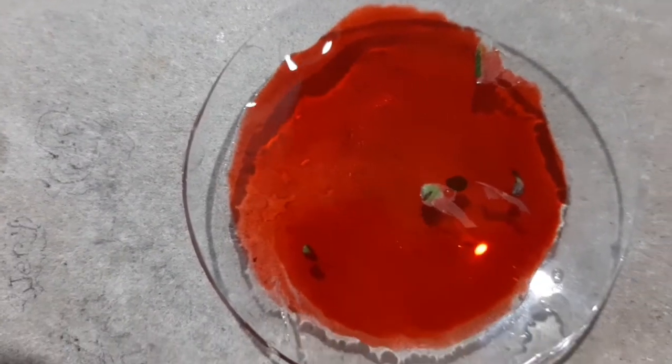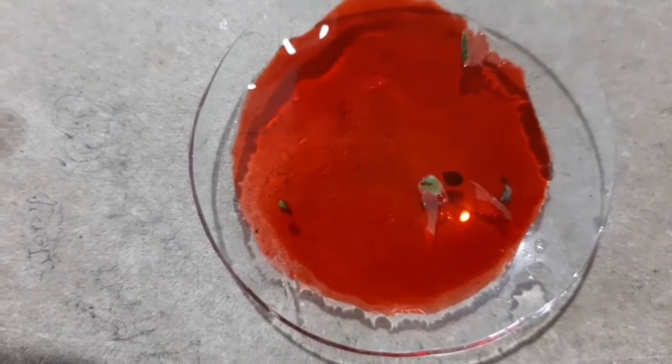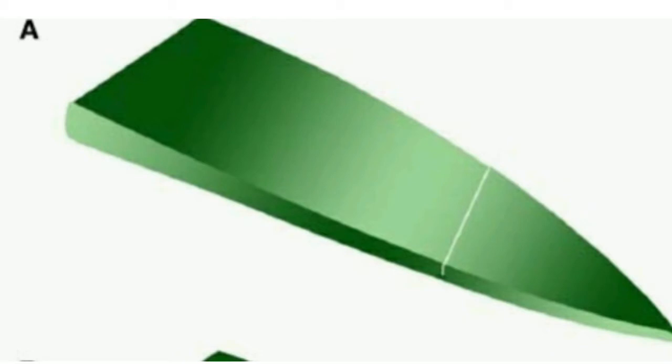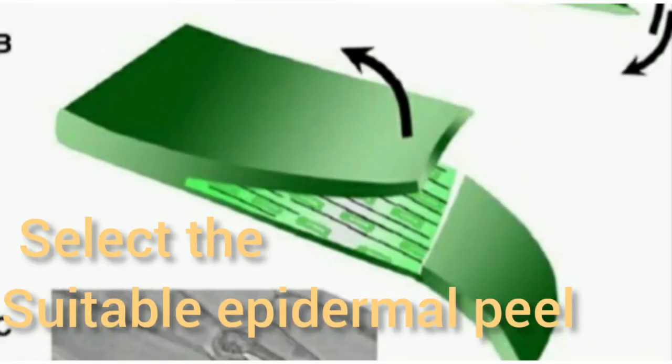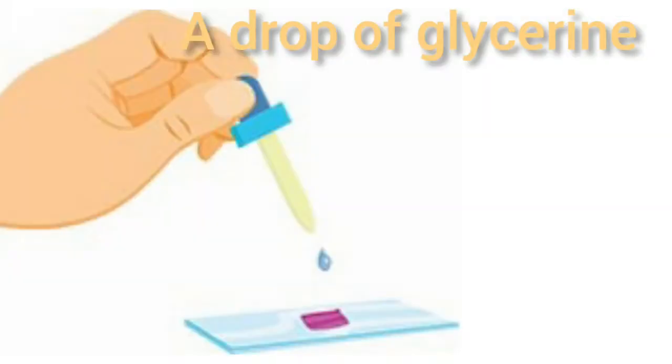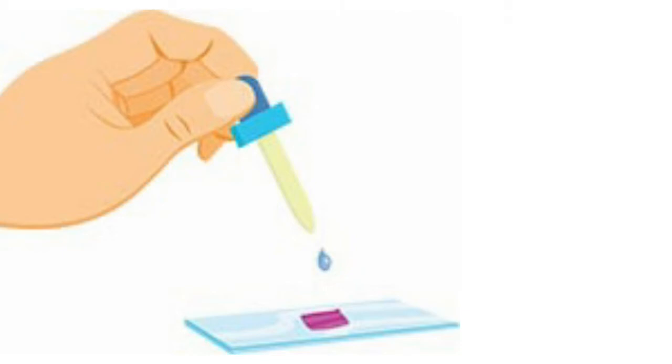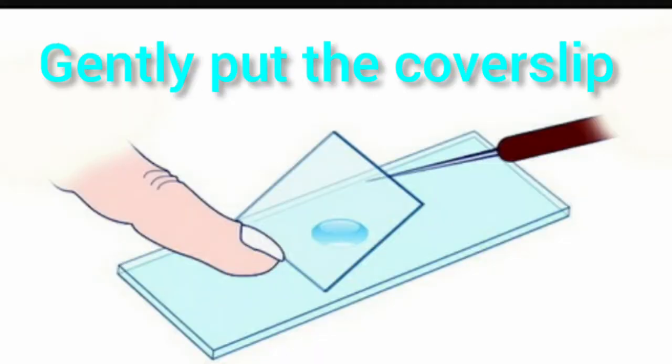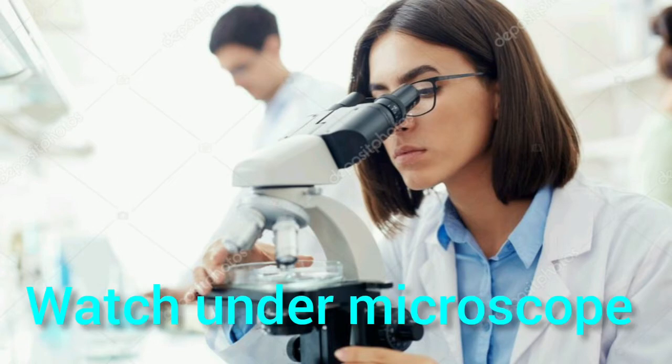And then you select a piece that you think is suitable and then you just place it over the slide. And then you put a drop of glycerine and you gently put the cover slip over it, and then you just watch under the microscope.